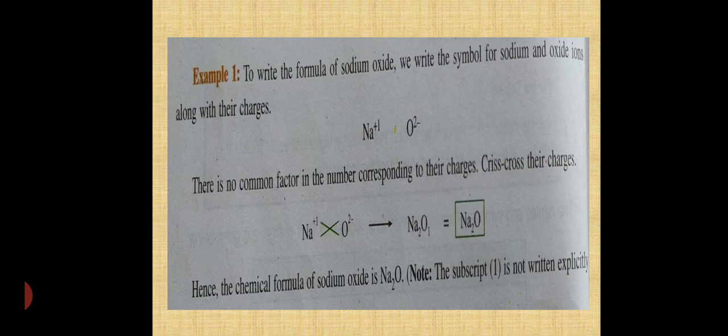1 is not written. It is assumed that there is 1 but is not written. So, what is the formula of sodium oxide Na2O? How it derived? We have to write the ions along with the charges. If the 2 charges are same, then they are cancelled off. Otherwise, the charges are crisscrossed.